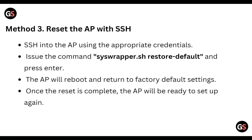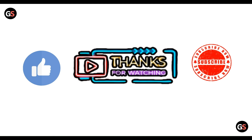The third method is to reset the AP using SSH. SSH into the AP using the appropriate credentials and issue the command syswrapper.sh restore/default, then press Enter. The AP will reboot and return to factory default settings. Once the reset is complete, the AP will be ready to set up again.